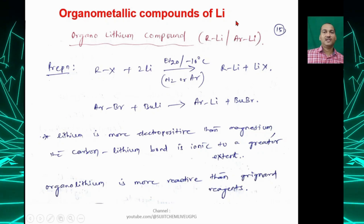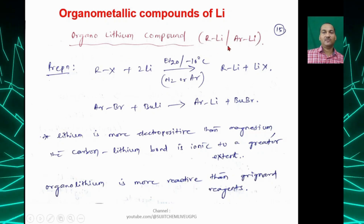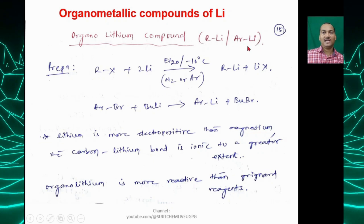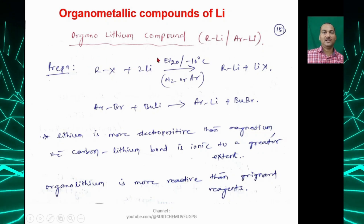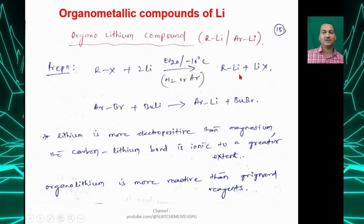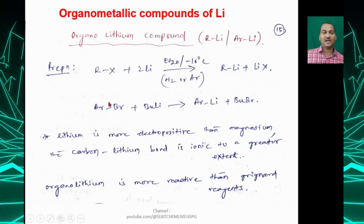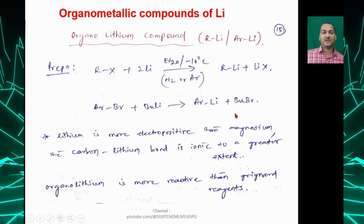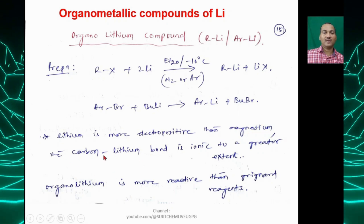Next are organolithium compounds, where carbon is directly bonded to the metal lithium, giving RLi (alkyl lithium) or ArLi (aryl lithium). Alkyl halide RX reacts with lithium in ether at −10°C under nitrogen or argon atmosphere to give RLi plus LiX. Aryl bromide reacts with butyl lithium to give ArLi plus BuBr. Lithium is more electropositive than magnesium, and the C-Li bond is ionic to a greater extent, so organolithium is more reactive than Grignard reagents.